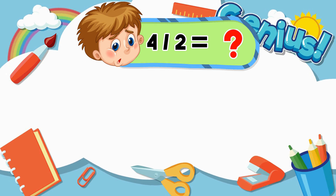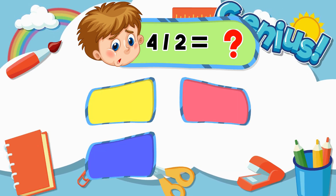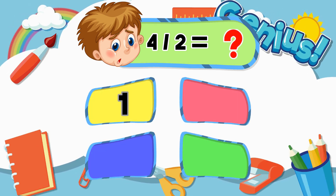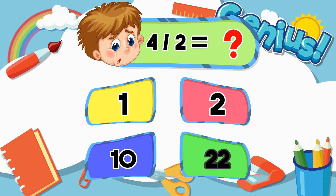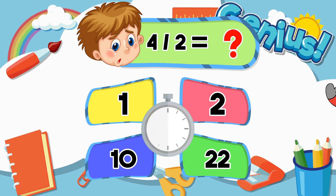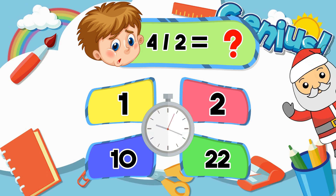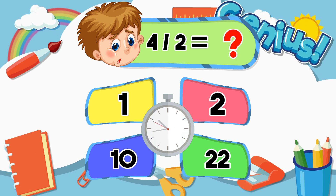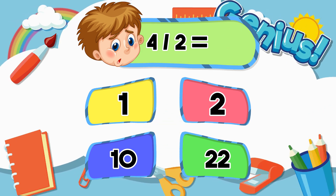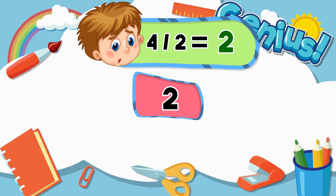What is 4 divided by 2? 1, 2, 10, 22. [Answer:] 2.